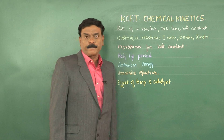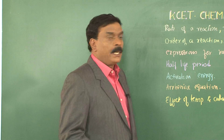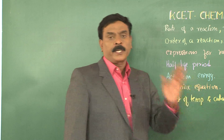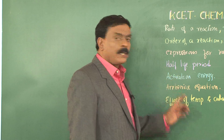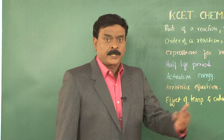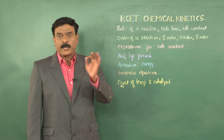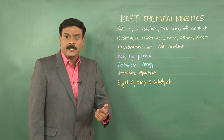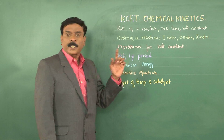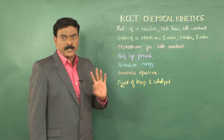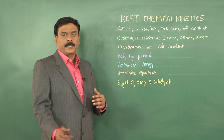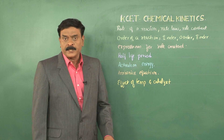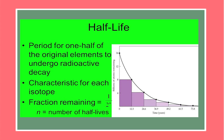Coming to half-life period: one has to note that irrespective of whether a reaction is slow or fast, it takes infinite time for a reaction to be completed. Therefore, when we compare the rates of different reactions, if we take the time taken for 100% completion as a criterion, in all cases it is infinite and we cannot conclude whether the reaction is slow or fast. Hence, we go for half-life period, which is defined as the time taken for 50% of the reaction to be completed.